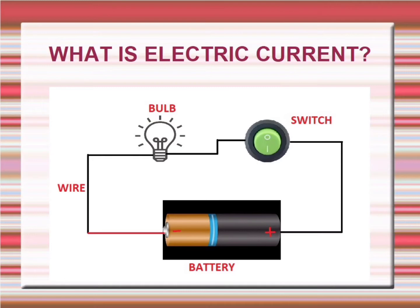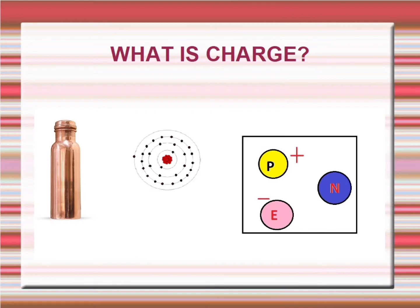To understand electric current, we need to first understand charge. We all know that every matter in this world is made of atoms. So let us take a simple thing. Imagine a water bottle in our house. If we see this bottle under a microscope, we can observe that it is made up of atoms.